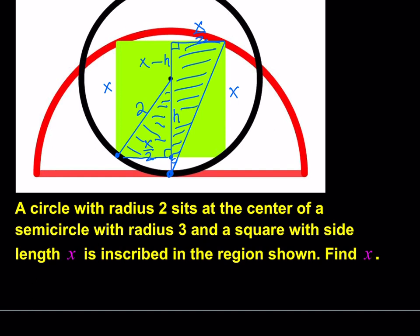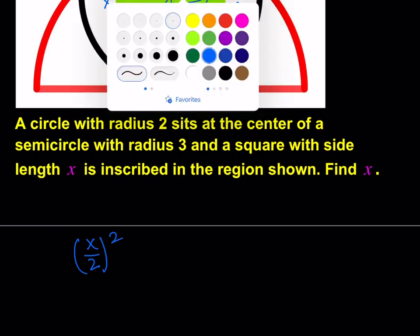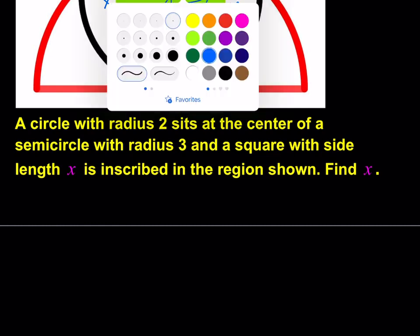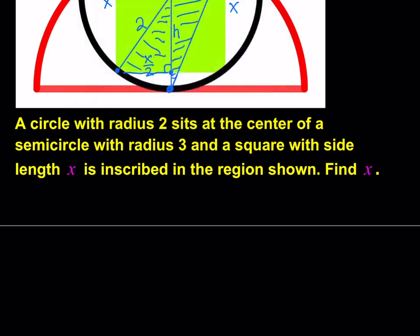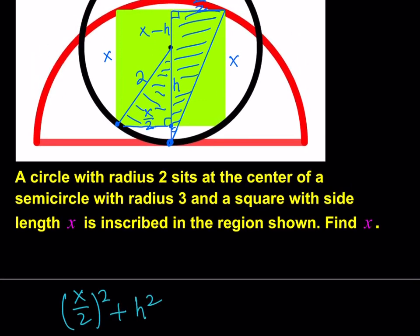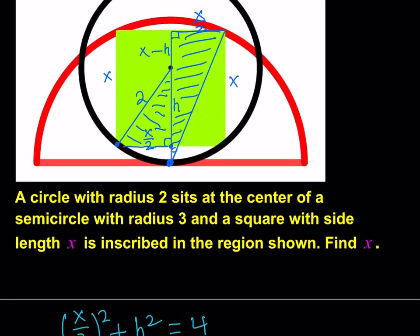Now, what do the triangles give me? First of all, look at the one on the left. So that gives me x over 2 squared plus H squared, which comes from the triangle on the left, is equal to 4, which is 2 squared.